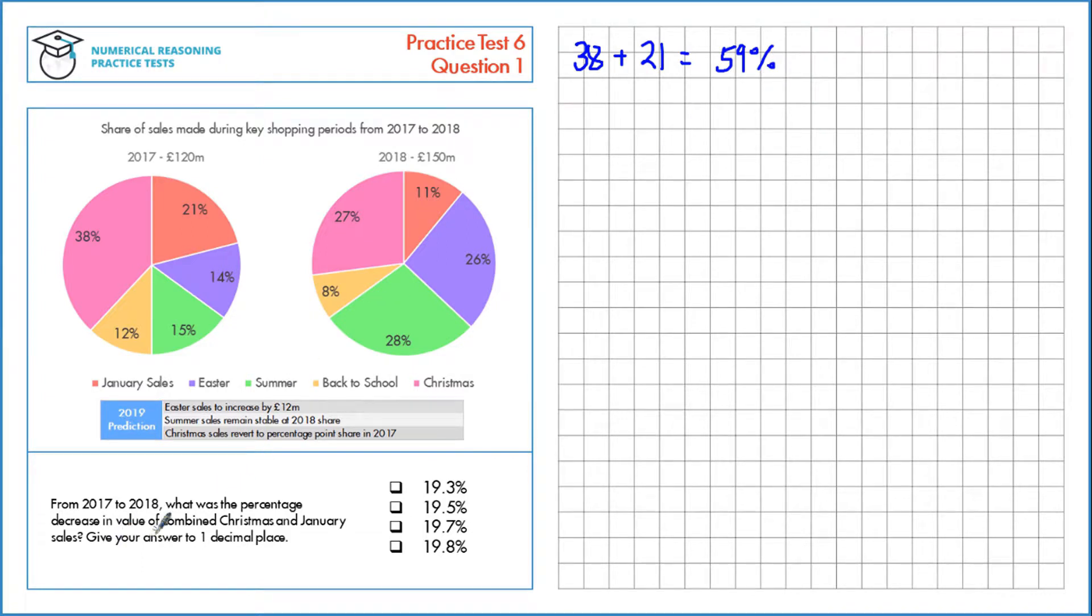If you want to know the percentage decrease in the value, let's calculate the value that this represents. We know 59% as a decimal is 0.59, and we'll multiply that by the value, the total value for 2017, which is 120 million. That gives us a total of 70.8 million pounds. That's for Christmas and January combined in 2017.